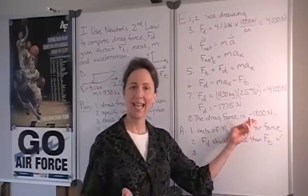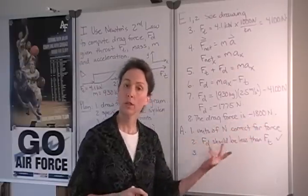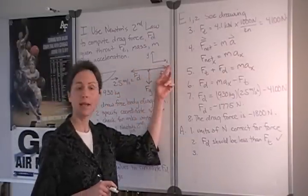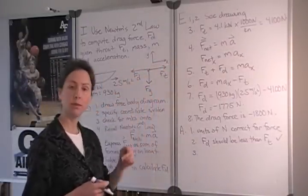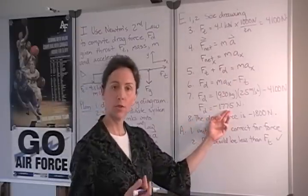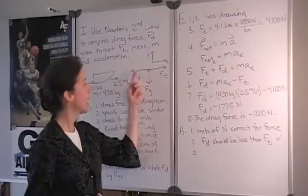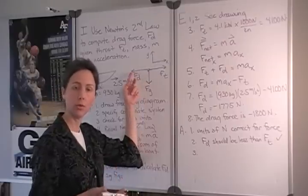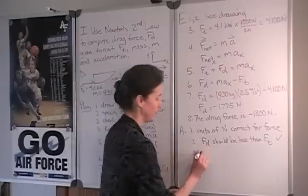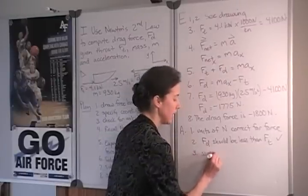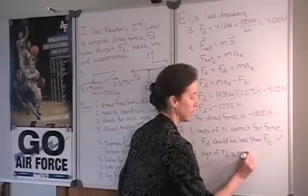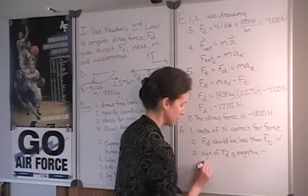Finally, what about the fact that we got a negative answer? Well, if we look back at our coordinate system, we specified that positive x was toward the right, which means that negative x would be toward the left, and the fact that we got a negative answer for the drag force means that the drag force is acting in the opposite direction to the thrust force, which is also what we would expect. So the sign of fd is negative, and this is expected.